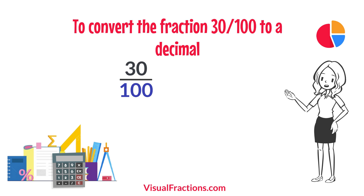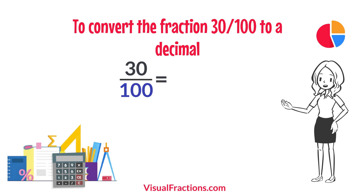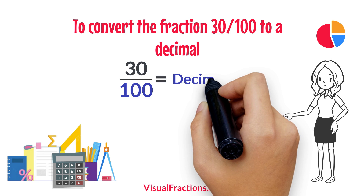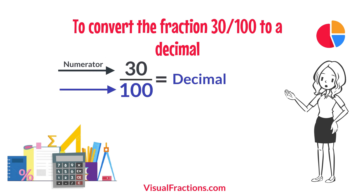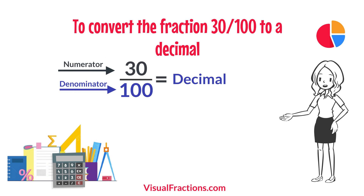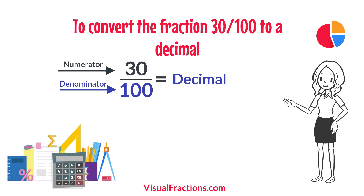To convert the fraction 31 hundredths to a decimal, all we need to do is divide the numerator, the top number, by the denominator, the bottom number. So, we simply divide 30 by 100.